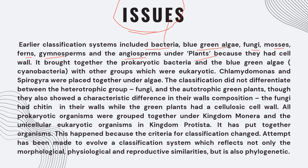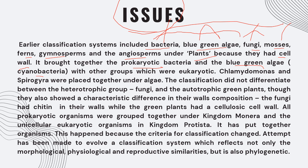Now, bacteria and blue-green algae (cyanobacteria) are placed in Monera. Fungi are a separate kingdom. The earlier system grouped prokaryotic bacteria and blue-green algae with eukaryotic organisms simply because they all had a cell wall. Also, Chlamydomonas and Spirogyra were placed together under algae despite their differences.